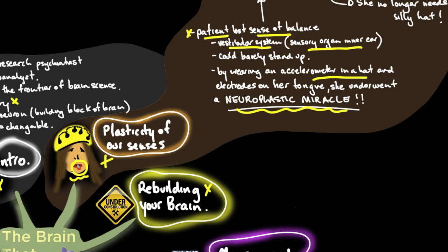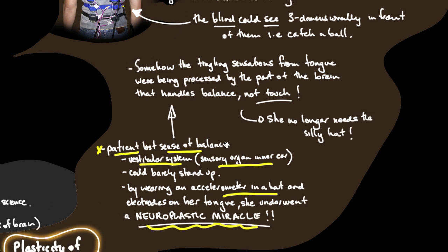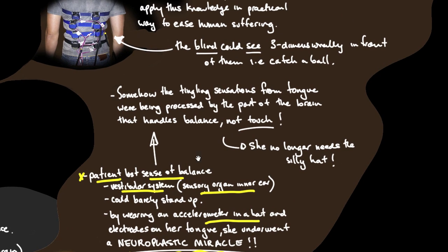She had an accelerometer on her head which provided feedback and electrodes on her tongue. When she leant forward, she got a tingling sensation on the tip of her tongue. When she leant back, she got a tingling sensation on the back, and left and right.